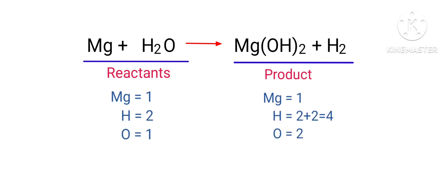If you look at this equation, the equation is not balanced. In the reactants side, there are one magnesium atom, two hydrogen atoms and one oxygen atom present. And on the products side, there are one magnesium atom, four hydrogen atoms and two oxygen atoms present.